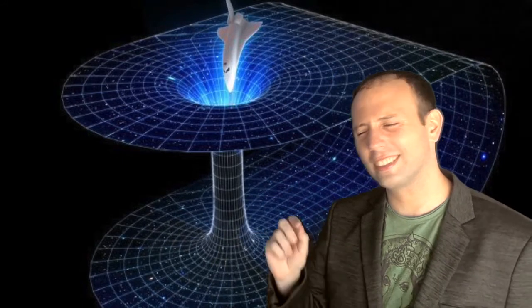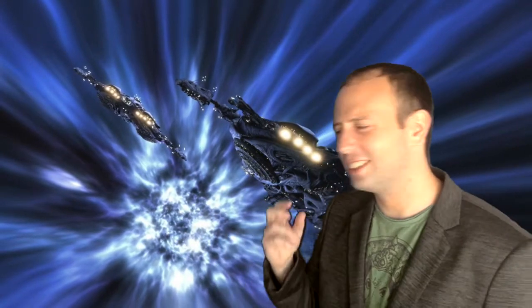Essentially, the wormhole involves connecting two potentially distant regions of space by a topological shortcut. Theoretically, one would enter the wormhole and instantaneously be transported to the exit located in a distant region of space. Although no observational evidence of wormholes exists, theoretically they can exist as a valid solution to general relativity.